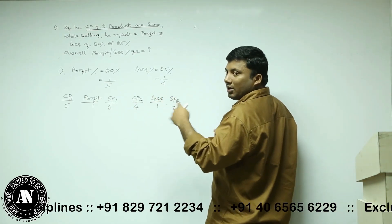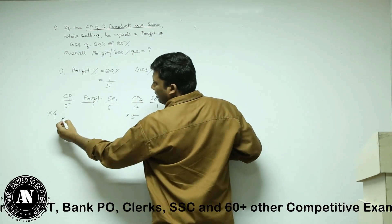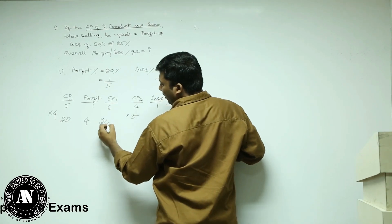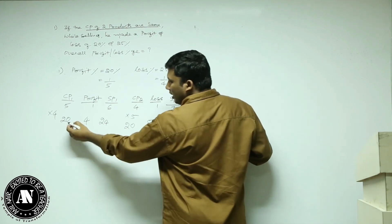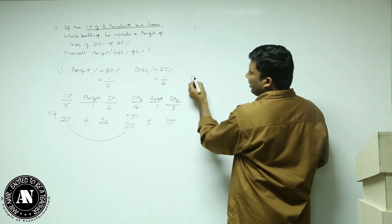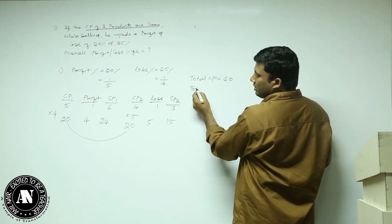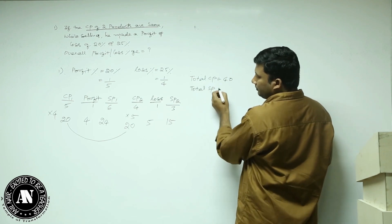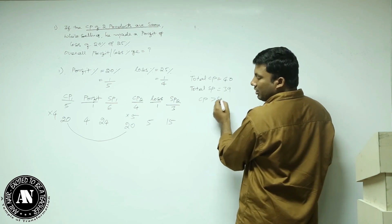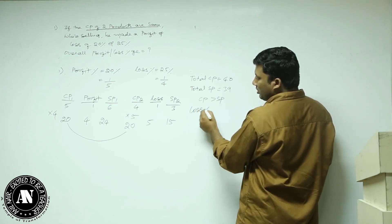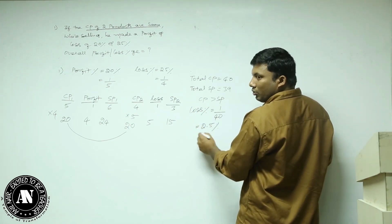Make them the same — take the LCM. Multiply by 4: cost price becomes 20, profit 4, selling price 24. Multiply by 5: cost price becomes 20, loss 5, selling price 15. Total cost price is 20 plus 20 = 40. Total selling price is 24 plus 15 = 39. CP is greater than SP, so this is a loss. Loss is 1 out of 40, which is 2.5%.